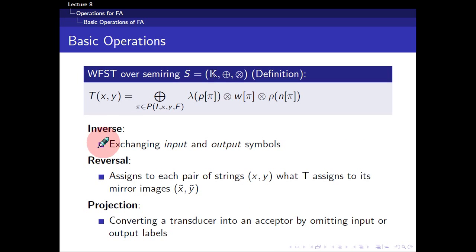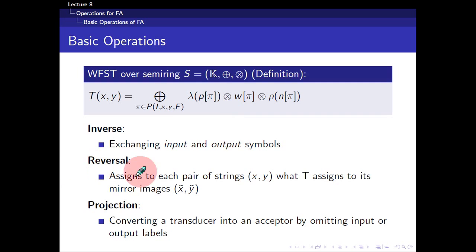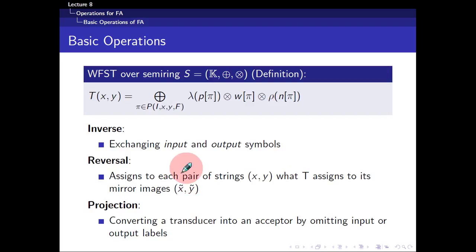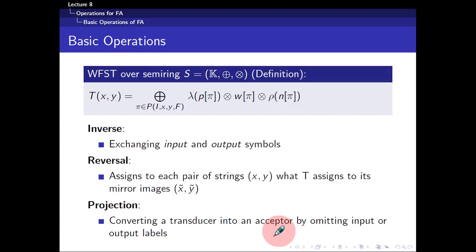The other three operations involve inverse, reversal, and projection. Inverse is to exchange the input and output symbols — so if you have 'a' as input and 'b' as output, your new transducer would have 'b' as input and 'a' as output. Reversal is like placing a mirror in the middle of the transducer, taking the mirror image, and making the final states into initial states. Projection is the easiest to understand — it converts a transducer into an acceptor by omitting either the output or input labels.